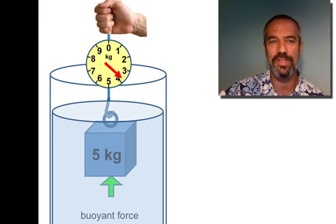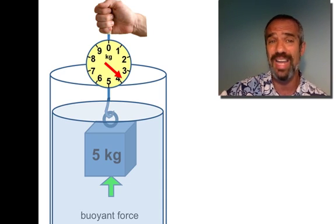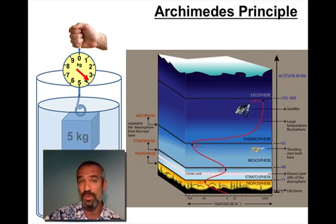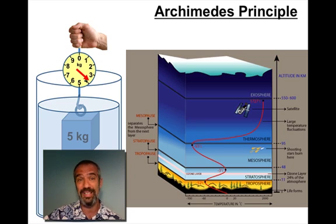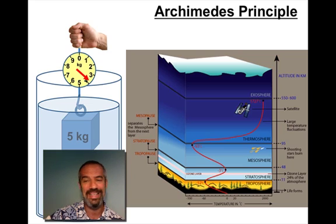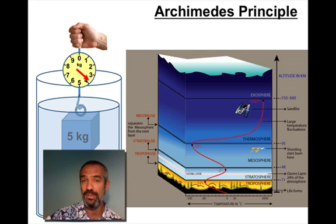Buoyant force is caused by the displaced fluid, and this applies to any kind of fluid — not just liquids, but gases as well. One gas we're familiar with is air. It's been said that we survive at the bottom of an ocean of air, and that ocean is quite deep. Our entire experience takes place in the troposphere, that bottom layer, which is all filled with fluid. Air is about one one-thousandth the density of water, but it's still a fluid. Objects in it are displaced and buoyed up by that force.